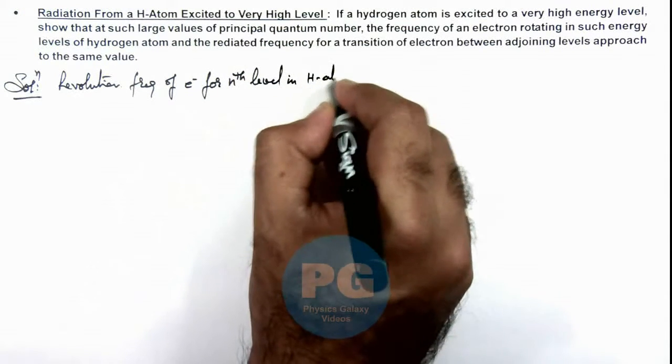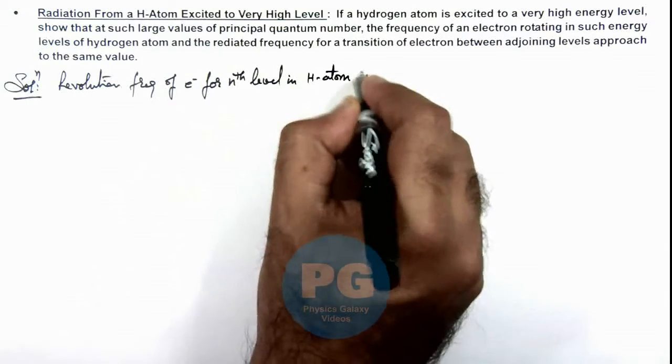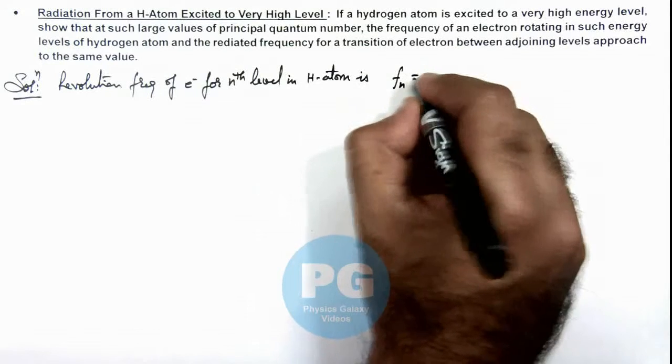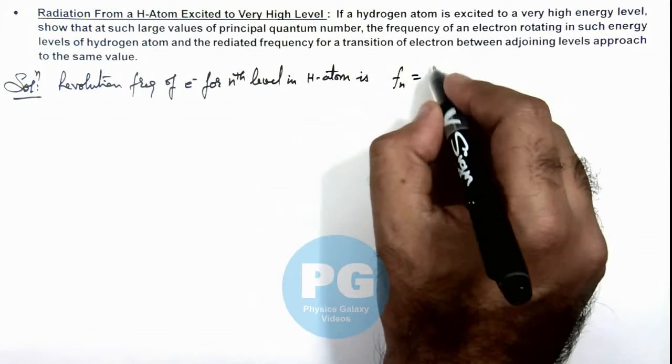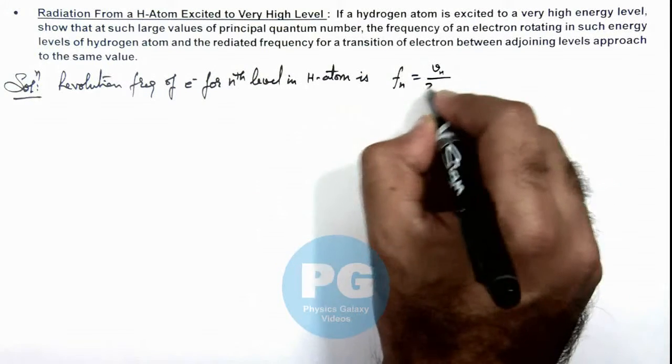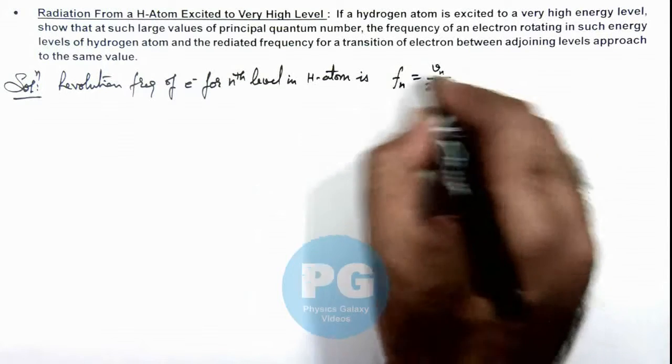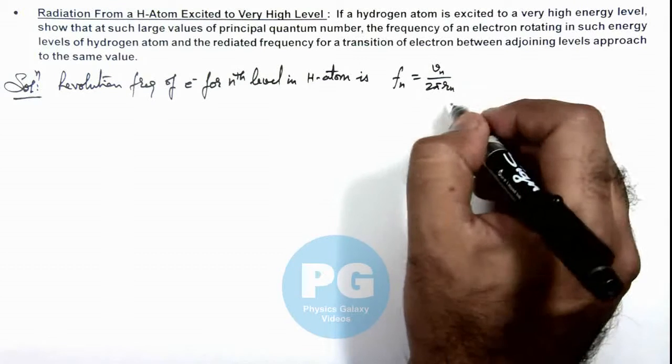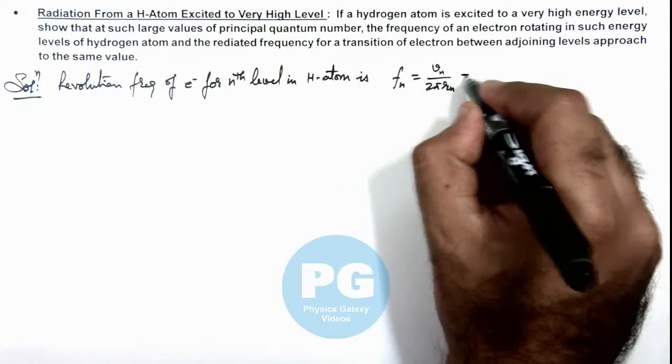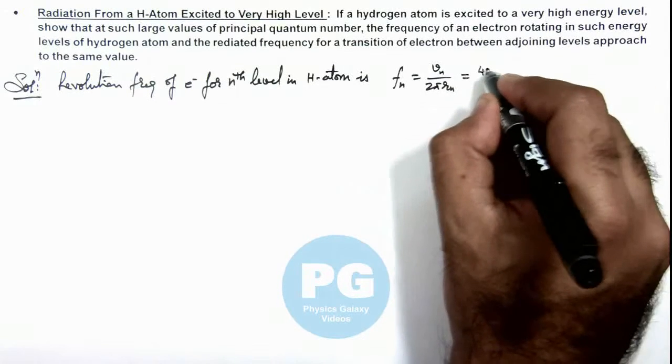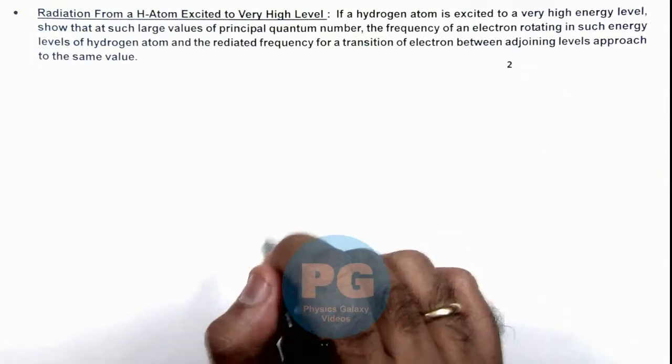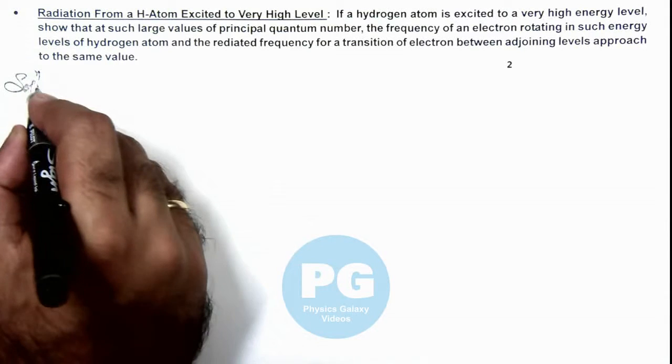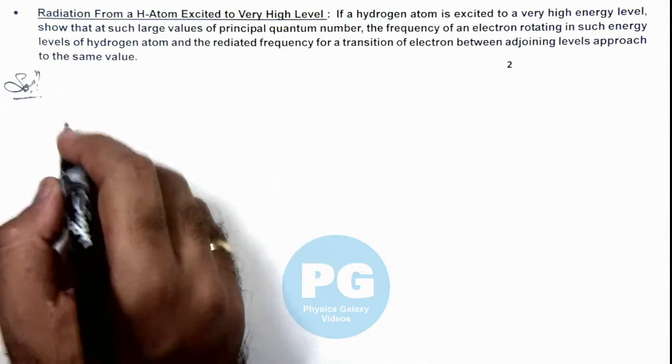In hydrogen atom, the frequency of nth level in hydrogen atom we know this is given by v_n over 2πr_n, the number of revolutions per second. If you substitute the value of v_n and r_n in expressional form for hydrogen atom, it gives 4π²k²e⁴m divided by n³h³. Say this is our first equation.